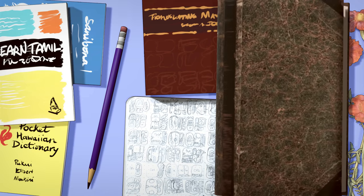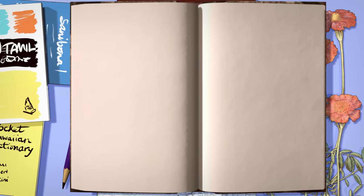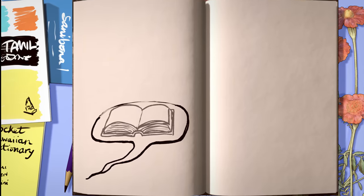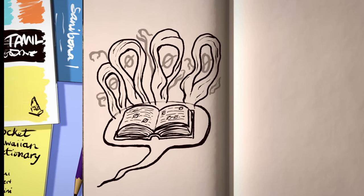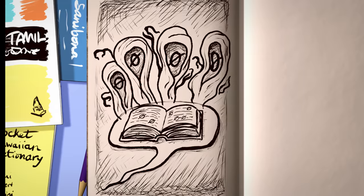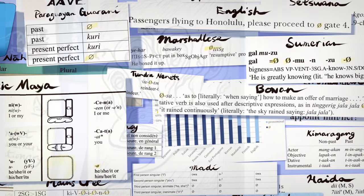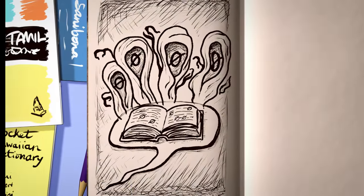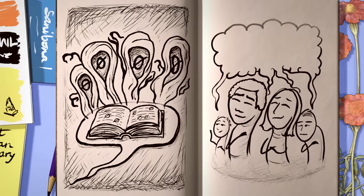Do languages have unspoken, meaningful nothings? Well, of silent letters you must have heard, but what about a silent word? Linguists claim they can detect the invisible, the inaudible. They go so far as to print zeros in books and papers. What are these ghostly non-element elements, and why do linguists believe in them?